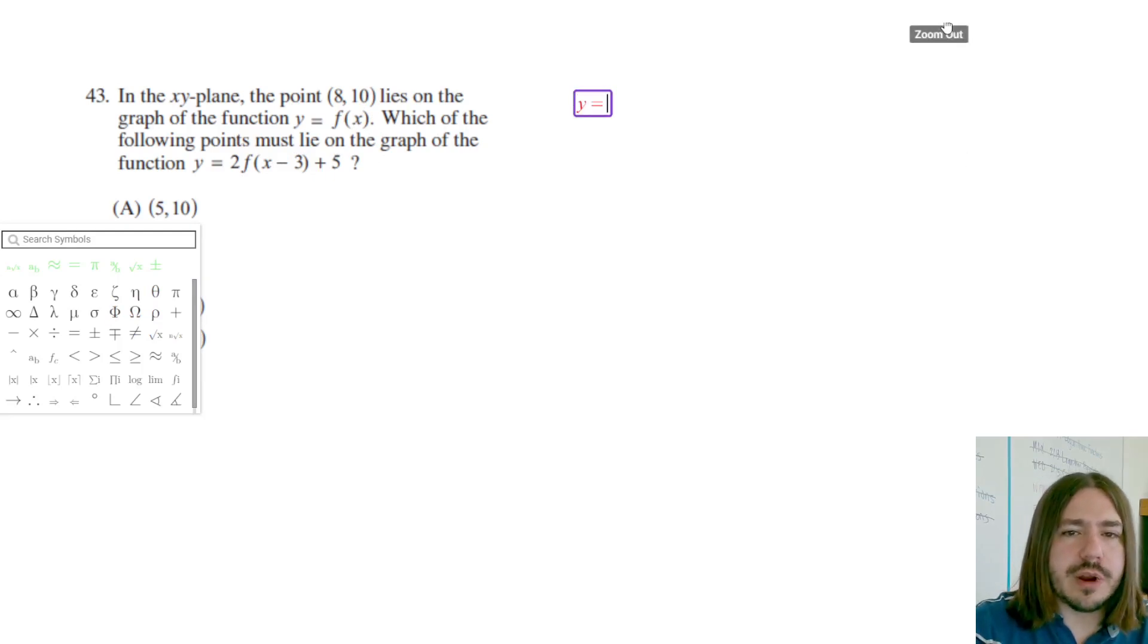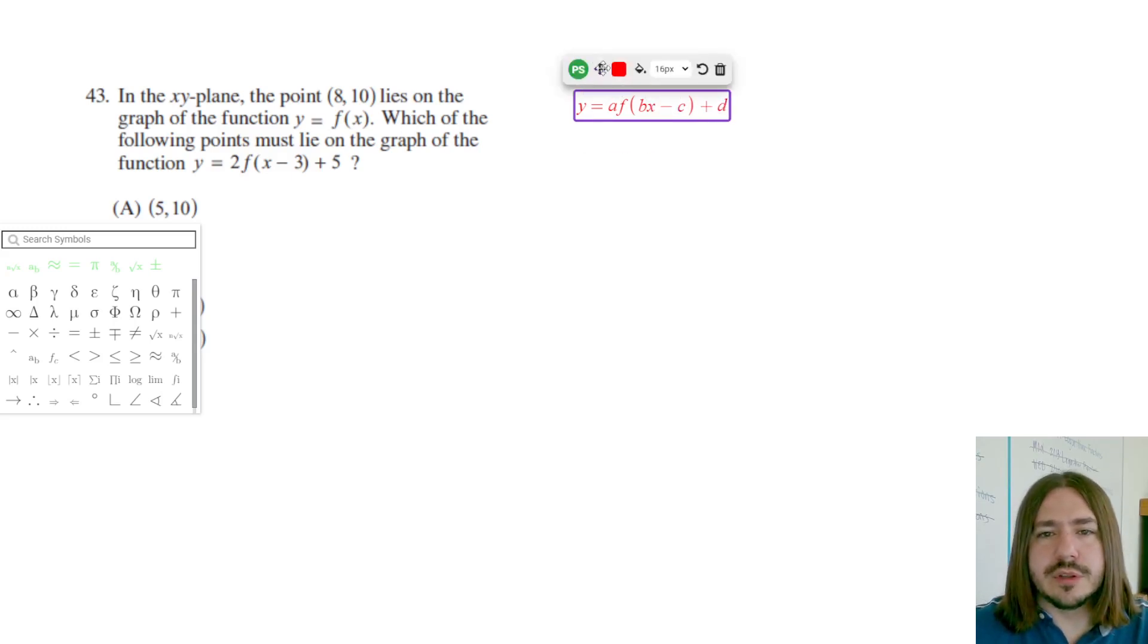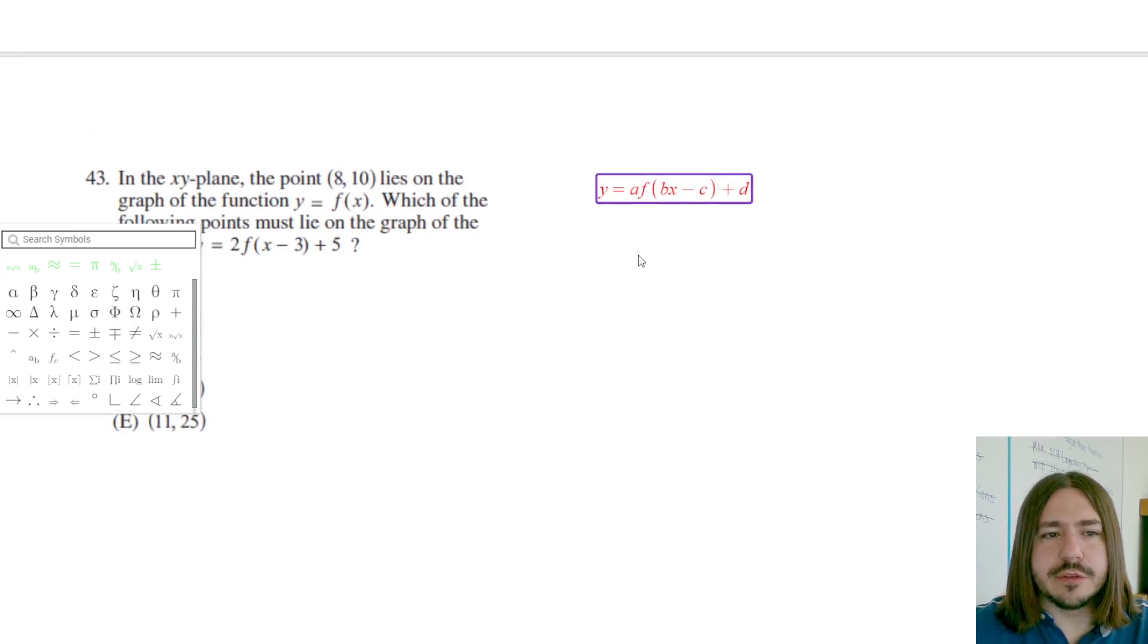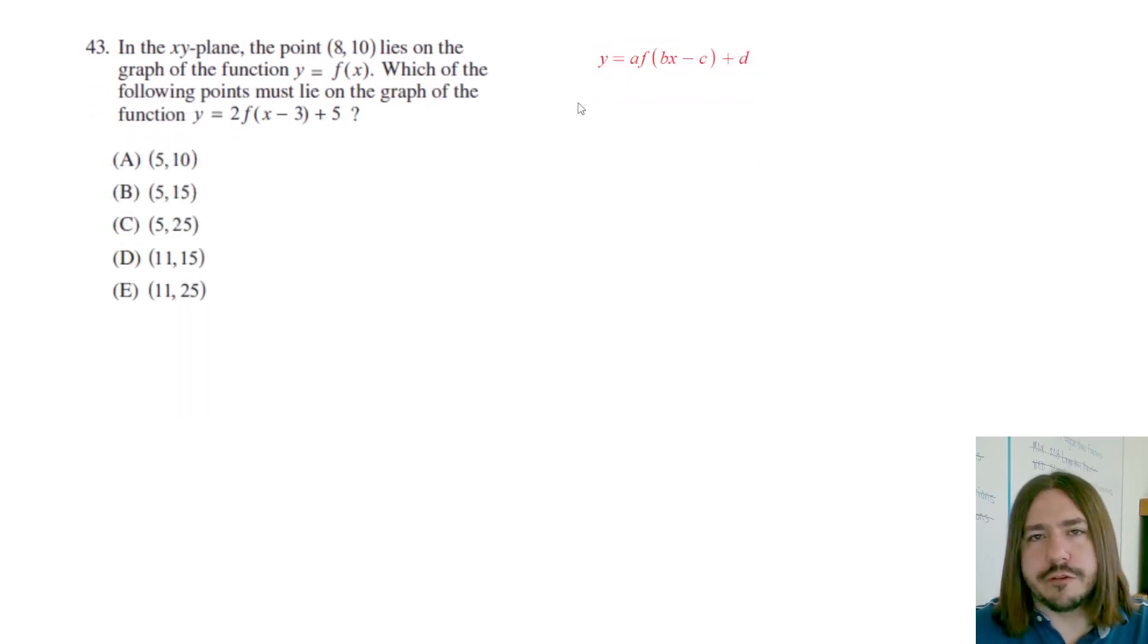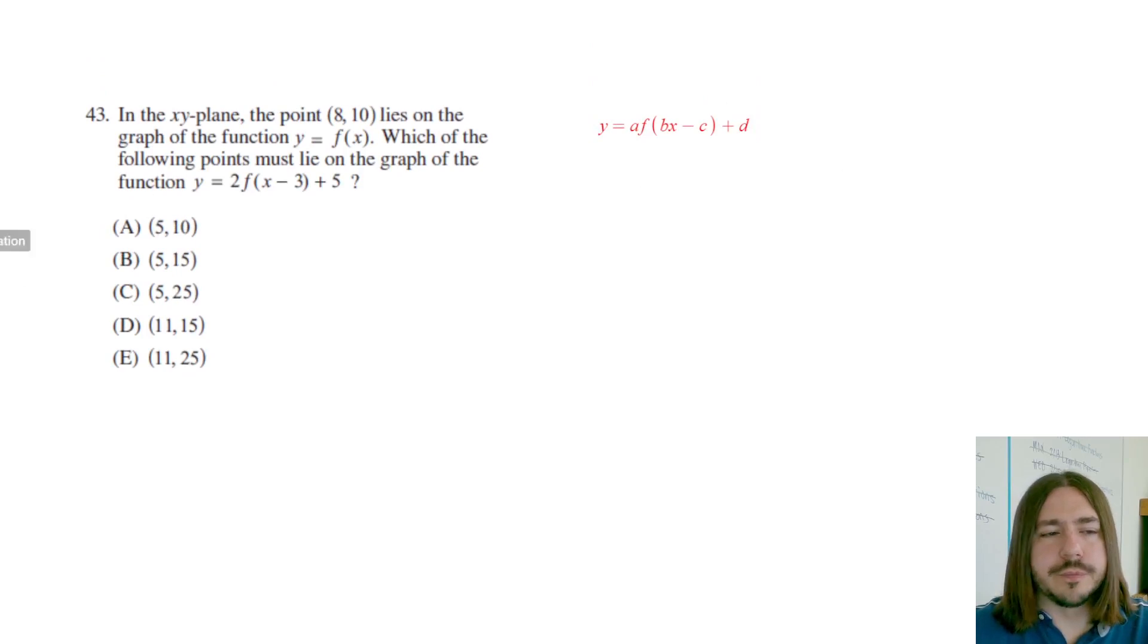So let's go through each of these transformations and describe what they're doing. So f of B, X minus C, or plus D. I'm basically just going to give generic names for each one of these parameters that will transform whatever function the original one is. So let's describe what each one does here.